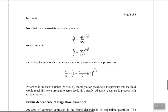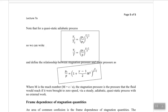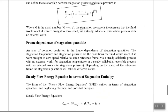For the quasi-static adiabatic process — which you derived in your term exam — for the stagnation pressure you can derive this equation. The stagnation pressure equation involves M, the Mach number, where M = C/A. The stagnation pressure is the pressure the fluid would reach if it is brought to zero speed by an adiabatic quasi-static process with no external work done.